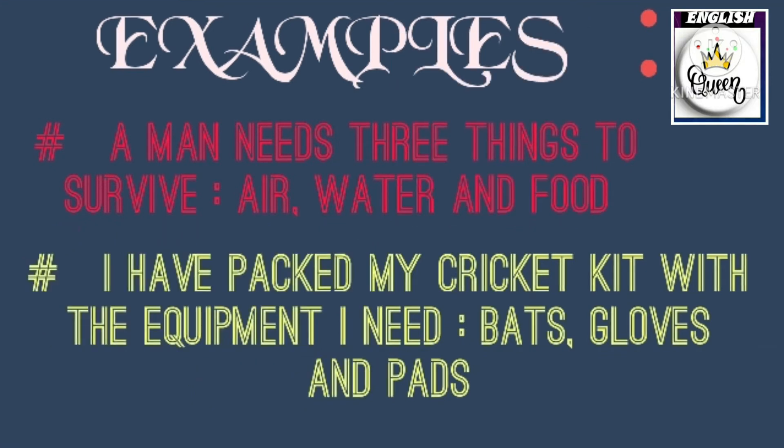For example: 'A man needs three things to survive.' Here, the meaningful sentence comes first, followed by the colon, then the dependent clause: air, water, and food. So whatever is used after a colon is a dependent clause.